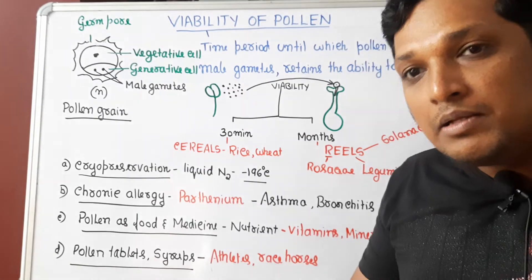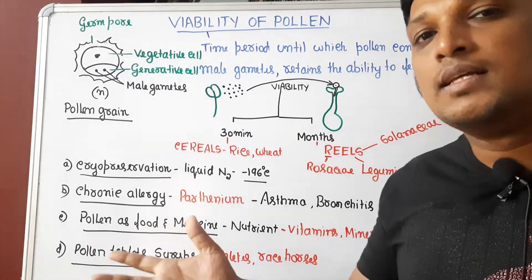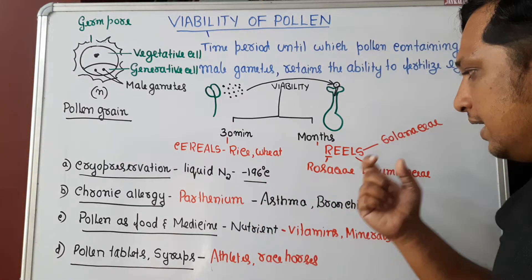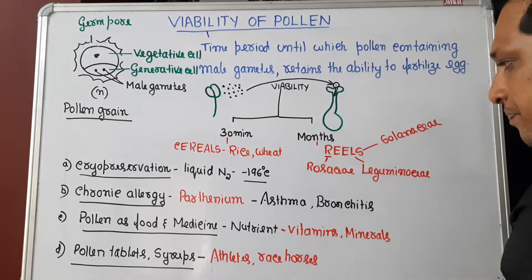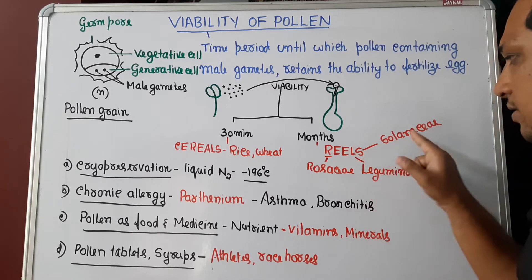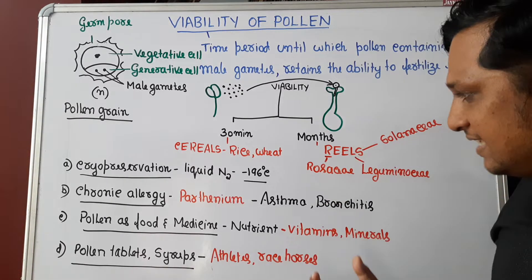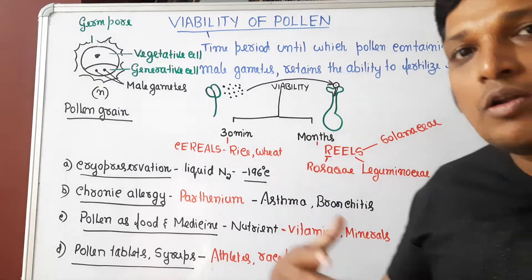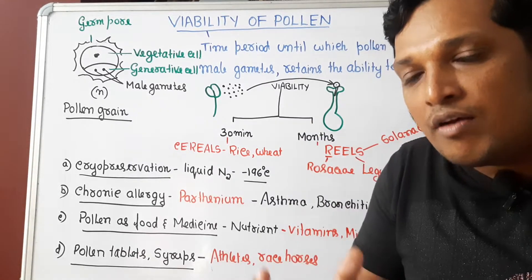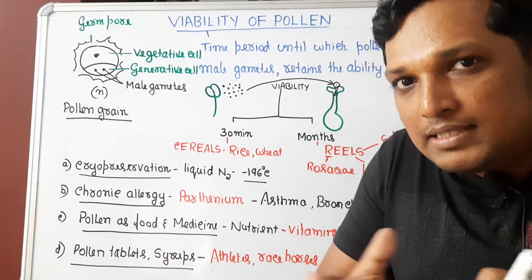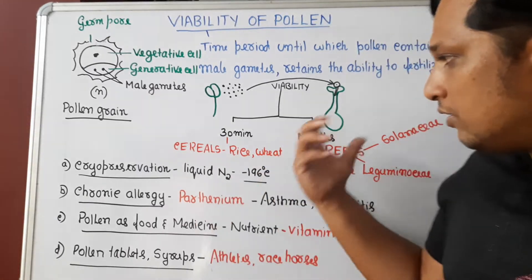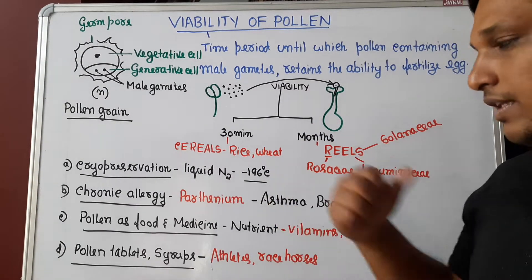In some other plant families, the viability period can be very high — lasting for months. Use the abbreviation REELS to remember these: R for Rosaceae, L for Leguminosae, and S for Solanaceae. In these three families, the viability period lasts for months, meaning the pollen grain can still fertilize the egg two months after being released, but not after that period.